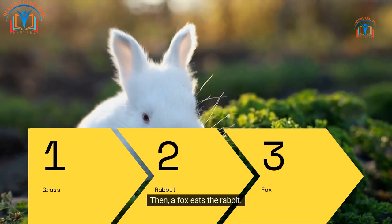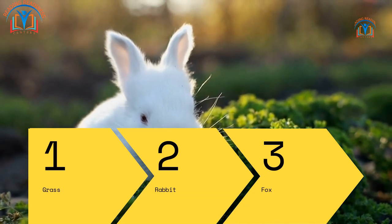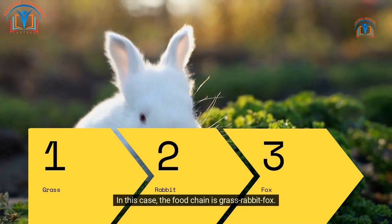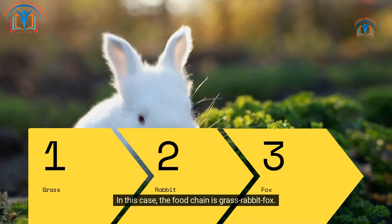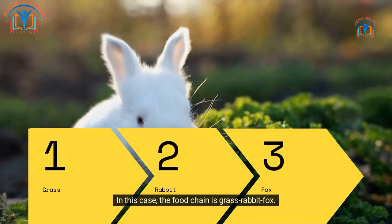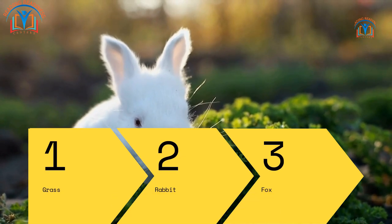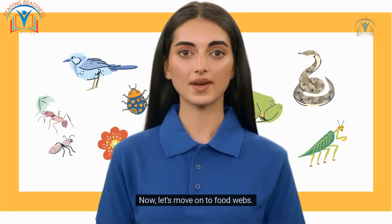In this case, the food chain is: grass → rabbit → fox. Now let's move on to food webs.